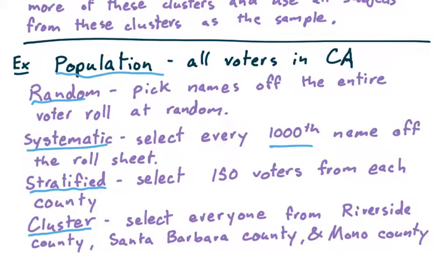A stratified sample, we might say we'll split the state up into counties, and we'll randomly select 150 voters from each county. That would be stratified because we've broken it down into subgroups or strata and taken a select number at random from each of those.